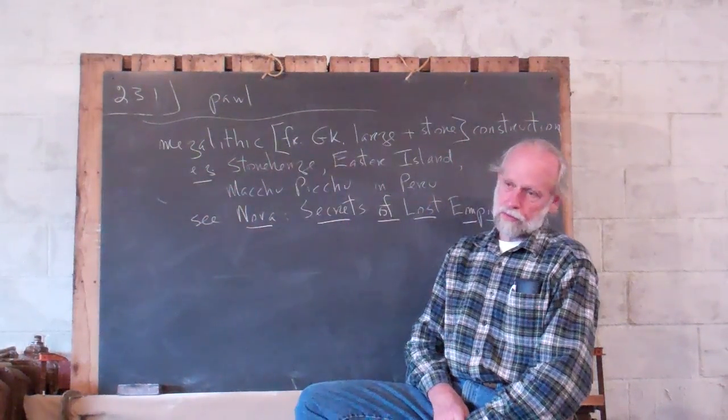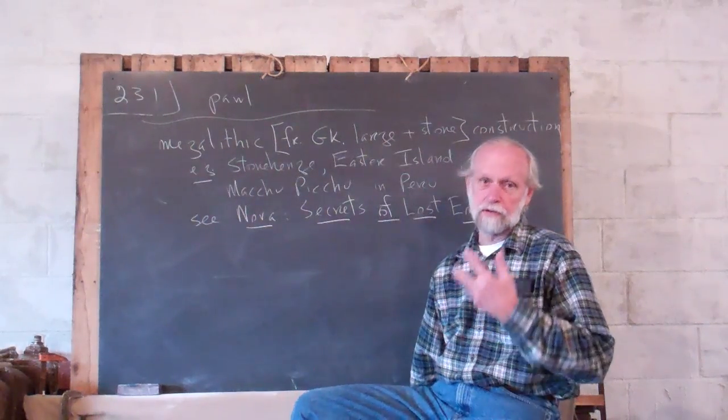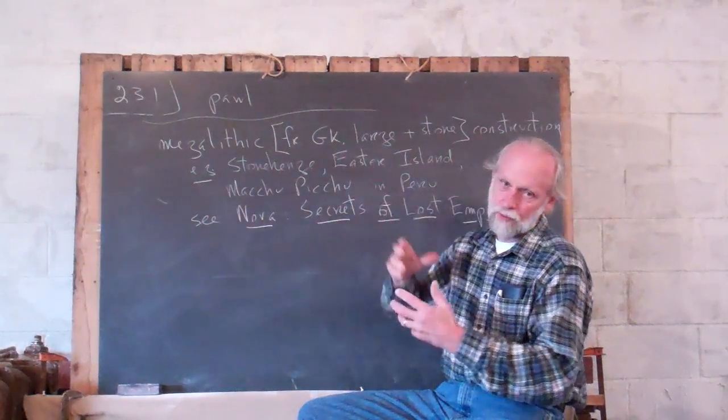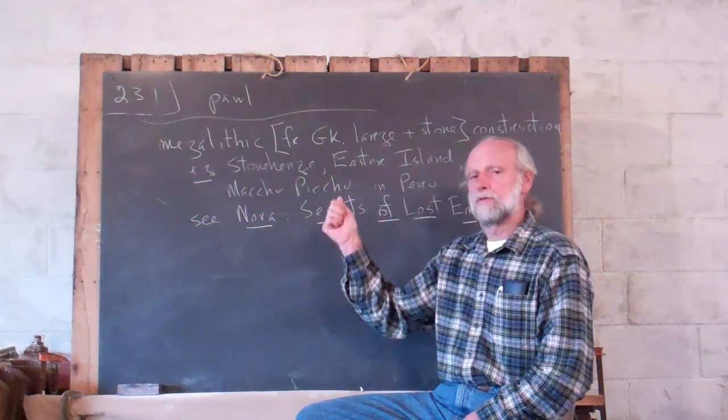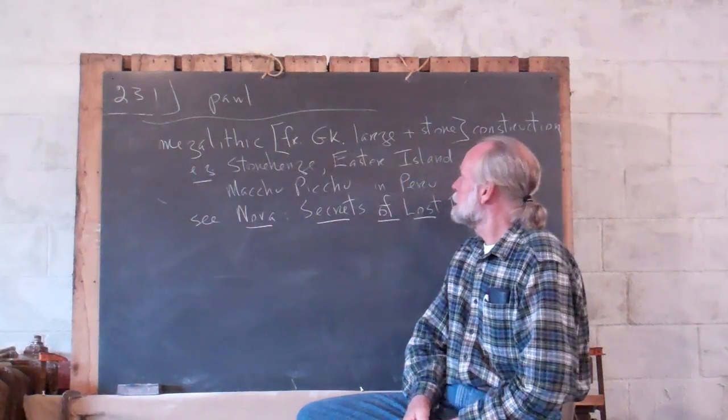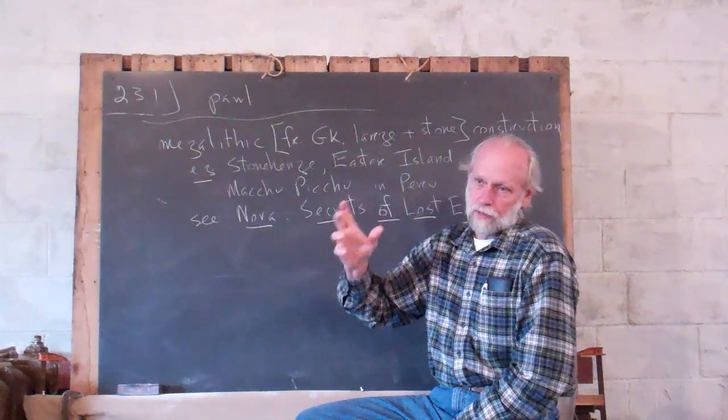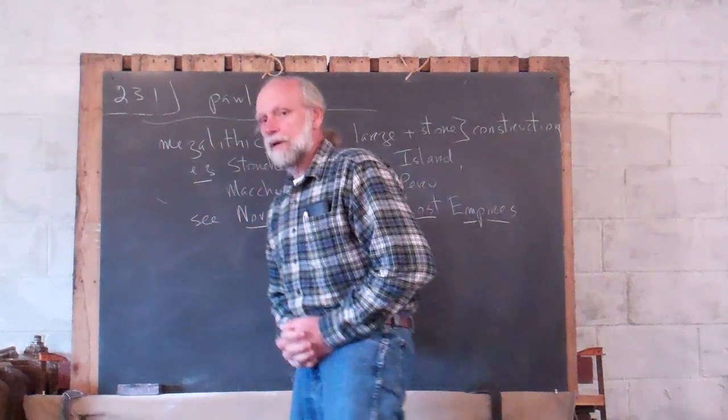But megalithic is the word for this. Mega, meaning big, large. These come from two Greek words, from the Greek. Later on, I don't want to stop now to deal with this abbreviation, but GK is going to be Greek. Capital G would be German. Large plus lithos stone. Large stone construction.